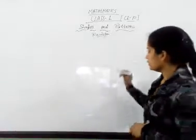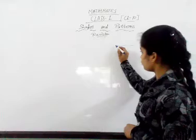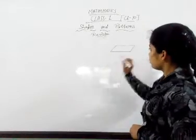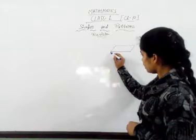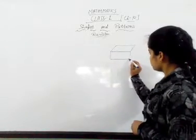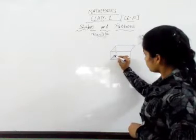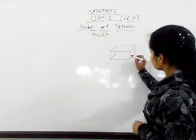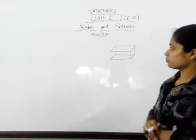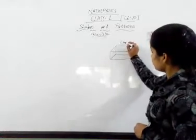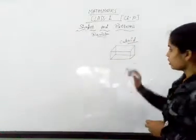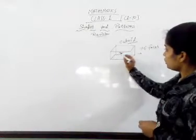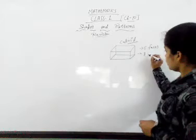Let's draw a new 3D shape. I draw slant lines and straight lines to form a cuboid shape. This is the cuboid shape. It has six faces, eight vertices, and twelve edges.